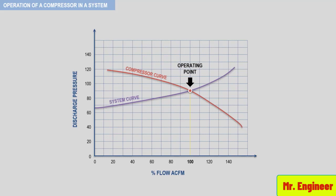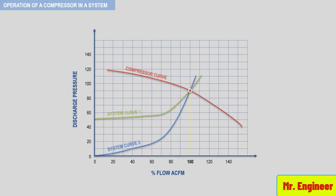This point of intersection is also known as the operating point, which will be covered in detail in the next video. In the next figure, two different system resistance curves representing two different process systems are shown. The curve starting at zero differential pressure represents a process system where only system resistance is present — when the compressor is shut down, the pressure in the system is zero. This would typically describe a recycle process. The second curve starts at 50 psi differential pressure, showing that a pressure differential of 50 psi exists when the compressor is shut down. You can see that the higher the percent of vessel pressure in the process system, the flatter the system resistance curve is.